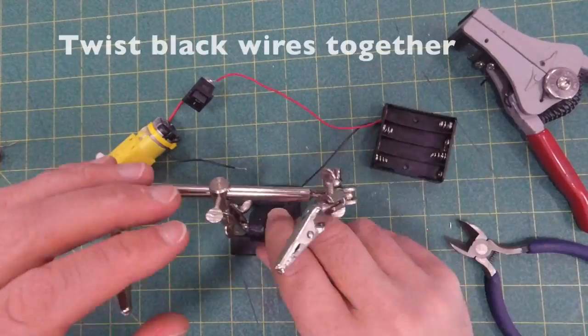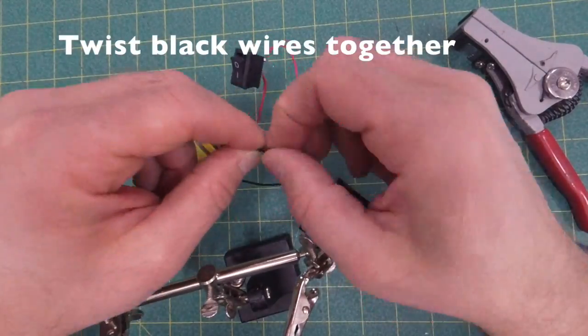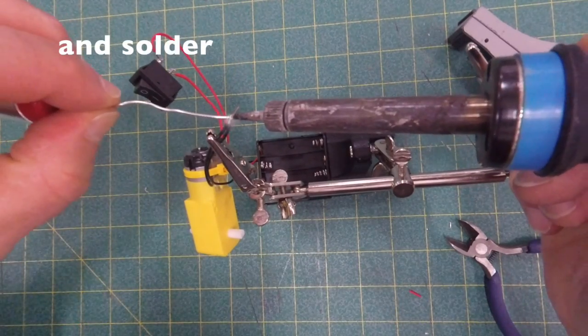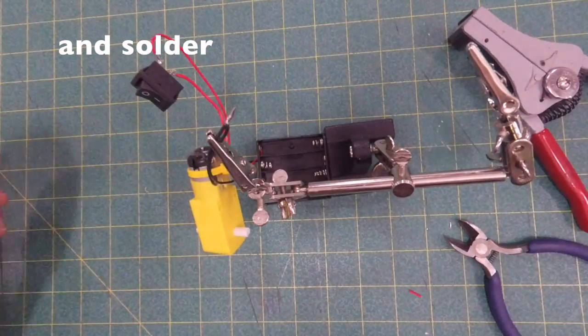Now the only other place to solder—and I'm going to clip off some extra wire there—but the only other place to solder are the two black wires. Twist those together, hold them in the helping hands, and then just add solder. That's usually pretty quick.